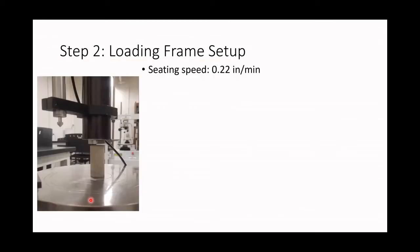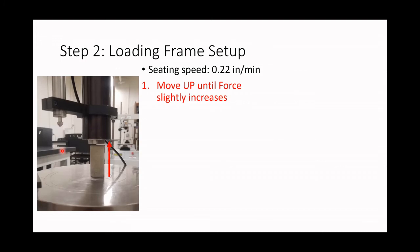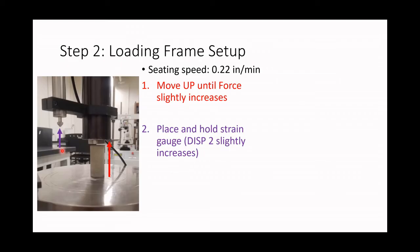When we seat the sample, we use the seating speed to put the upper part of the frame in contact with the sample without engaging the axial strain on the lower part. We move up until we see that the force slightly increases, indicating that the sample is in contact with the frame. Then we place and hold the strain gauge — we will see that displacement Channel 2 also slightly increases. Finally, we place a protective plastic around the sample in case it fractures and explodes.